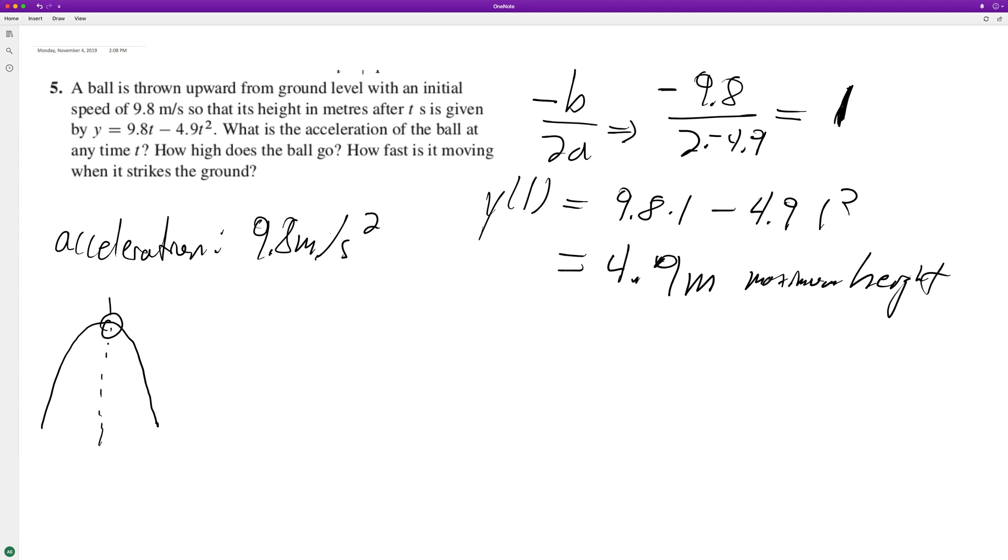So how fast is the ball moving when it strikes the ground? All we need to do is we need to solve 9.8T minus 4.9T squared to equal to zero. So factor out a T, put 9.8 minus 4.9T equals zero. So when we solve this, we get T is equal to zero, and then T is equal to two.